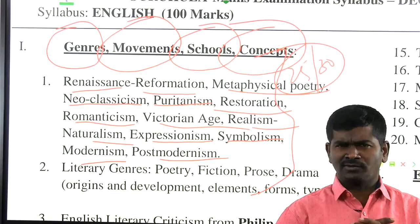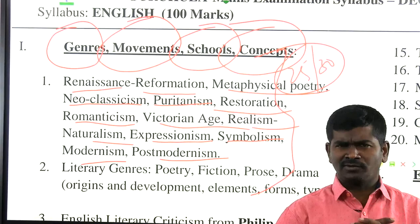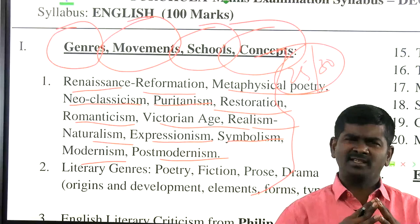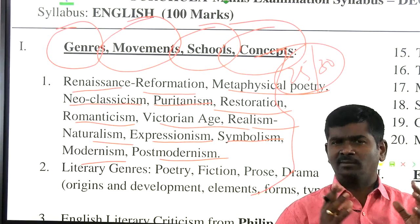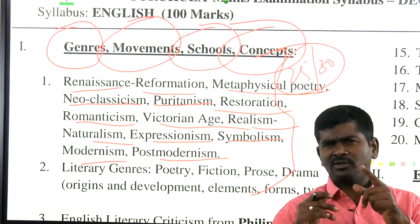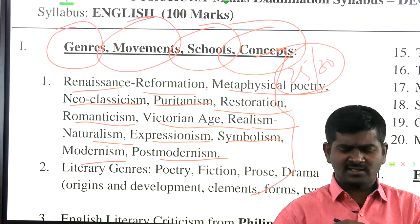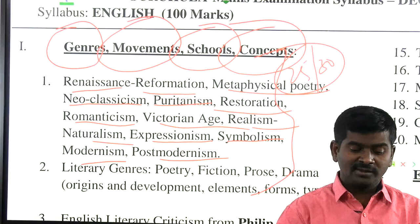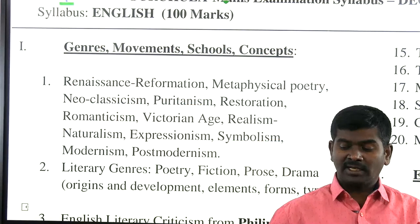During that period, John Milton becomes blind. And Neoclassicism — the period from 1660 to 1798 is called the Neoclassical Period, sub-categorized into three: Restoration (1660–1700), Augustan (1700–1745), and Age of Sensibility (1745–1798). What does it mean by Neoclassical Literature? What does it mean by Neoclassicism? Is there any connection between Neoclassicism and Classicism? Yes, there is a lot.